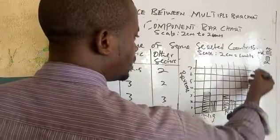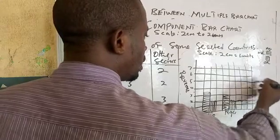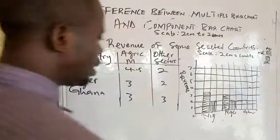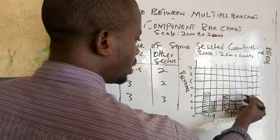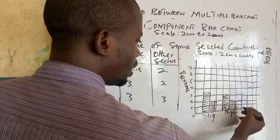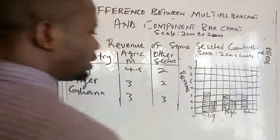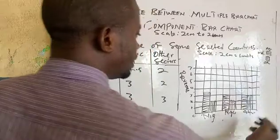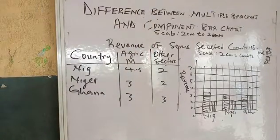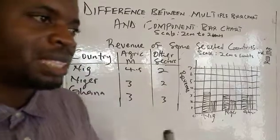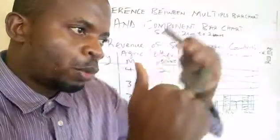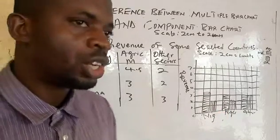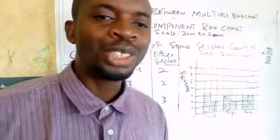Then leave a space again for the last country — Ghana. For Ghana, agric is also 3, so you start from here and draw the agric bar with its indicator, then place the other sector bar of 3 right beside it. So that is how you draw your multiple bar chart. For the component bar chart, you place the quantitative variables on top of each other, but for the multiple bar chart you place the variables beside each other. It's very simple. Please subscribe and thank you.